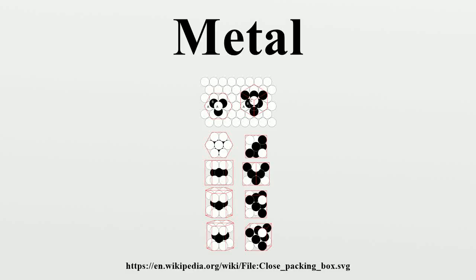A metal is a material that is typically hard, opaque, shiny, and has good electrical and thermal conductivity. Metals are generally malleable — that is, they can be hammered or pressed permanently out of shape without breaking or cracking — as well as fusible and ductile.